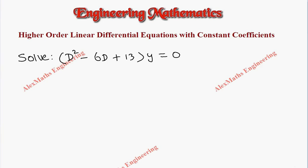Hi students, this is Alex here. The question is solve D² - 6D + 13y = 0. The first step is to write the auxiliary equation where we write capital D as small m, so